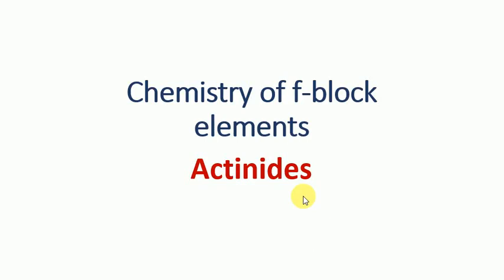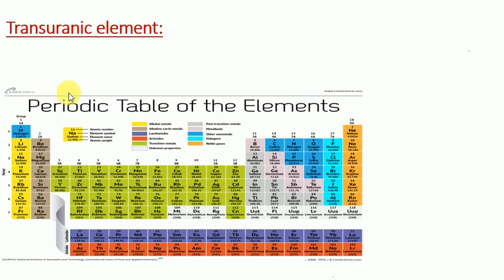Good morning dear students. Today we will see the preparation of transuranic elements and nuclear fuels. We have already started Chapter 4, the chemistry of F-block elements. The lanthanides and some introductory part of the actinides — electronic configuration and oxidation number — have already been discussed. Today we will see the general methods of preparation of transuranic elements and nuclear fuels.